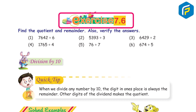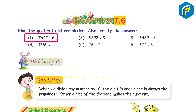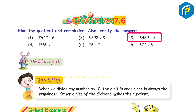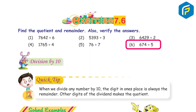Exercise 7.6: Find the quotient and remainder. Also verify the answer. 1) 7642 ÷ 6: quotient 1273, remainder 4. 2) 5393 ÷ 3: quotient 1797, remainder 2. 3) 6429 ÷ 2: quotient 3214, remainder 1. 4) 1765 ÷ 4: quotient 441, remainder 1. 5) 76 ÷ 7: quotient 10, remainder 6. 6) 674 ÷ 5: quotient 134, remainder 4.